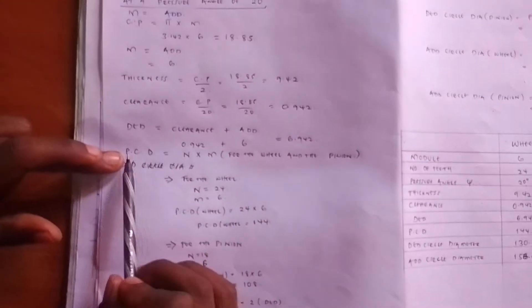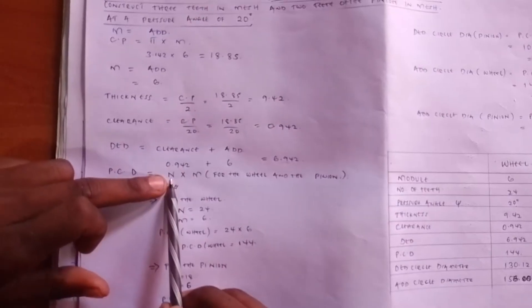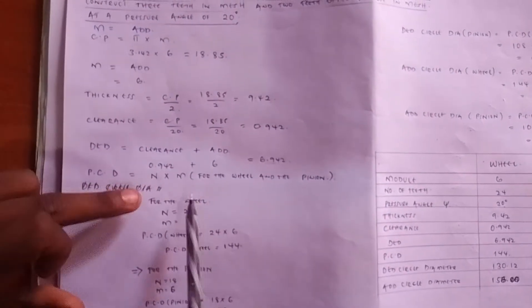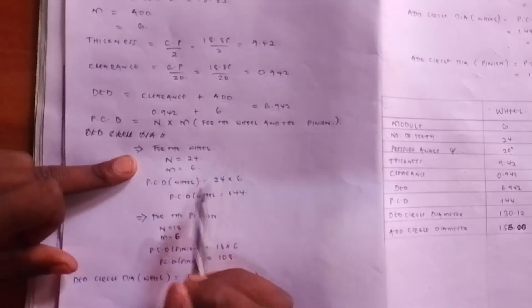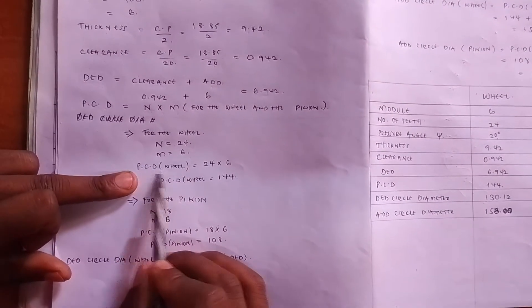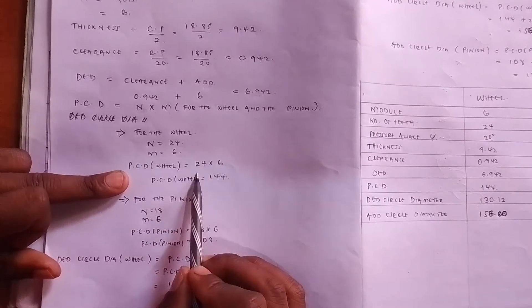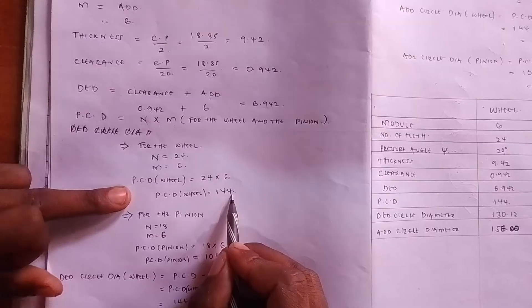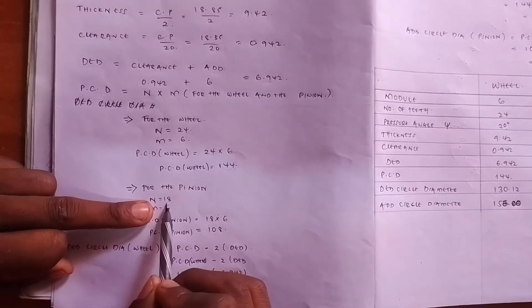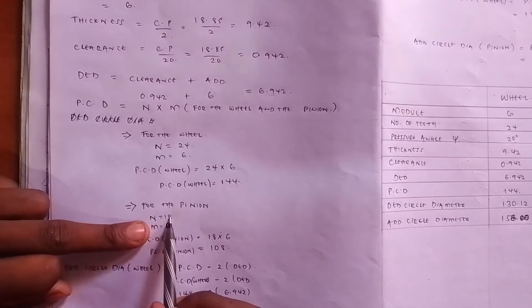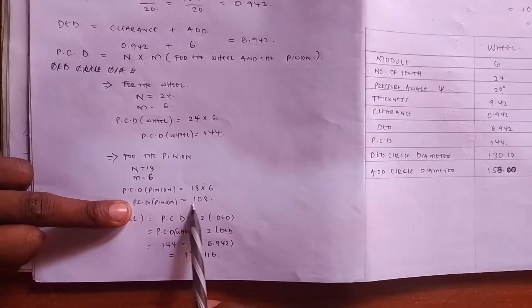Then we look for the PCD. The PCD is always equal to number of teeth times module. We look for it separately for the wheel and the pinion. The PCD of the wheel equals 24 times 6, because the number of teeth in the wheel is 24 and the module is 6, so the PCD of the wheel is 144. The PCD of the pinion is different because the number of teeth in the pinion is 18, so the PCD of the pinion equals 18 times 6, which is 108.